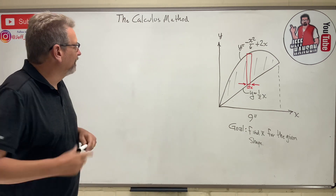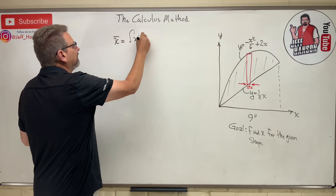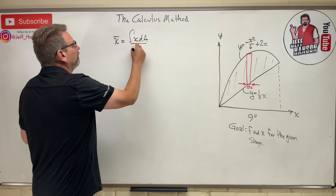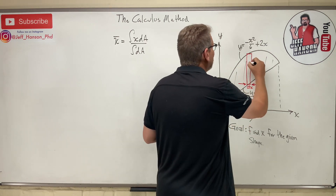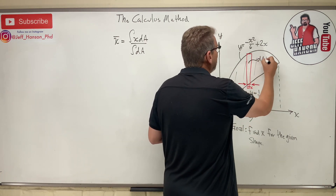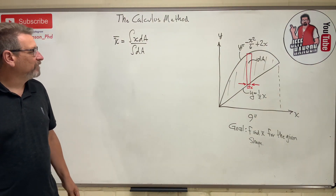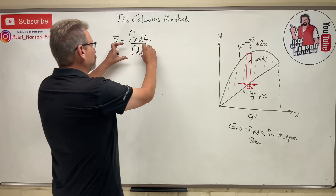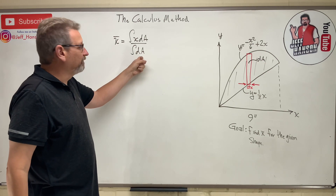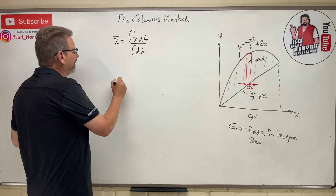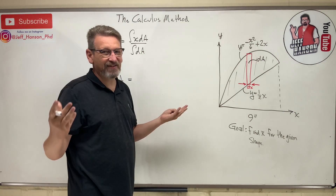The equation for x-bar is the integral of x dA over the integral of dA, where we're talking about a differential area — and this rectangle is one differential area. When you do these problems, I suggest you start on the bottom with the differential area, which is summing all of the differential areas up. One differential area, one rectangle, is just height times width.